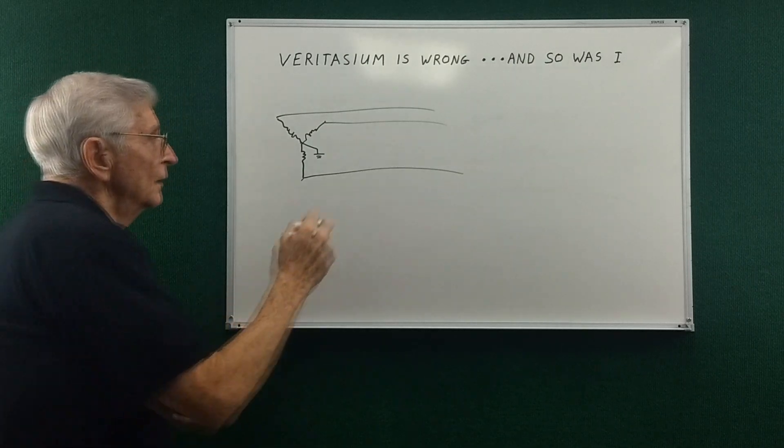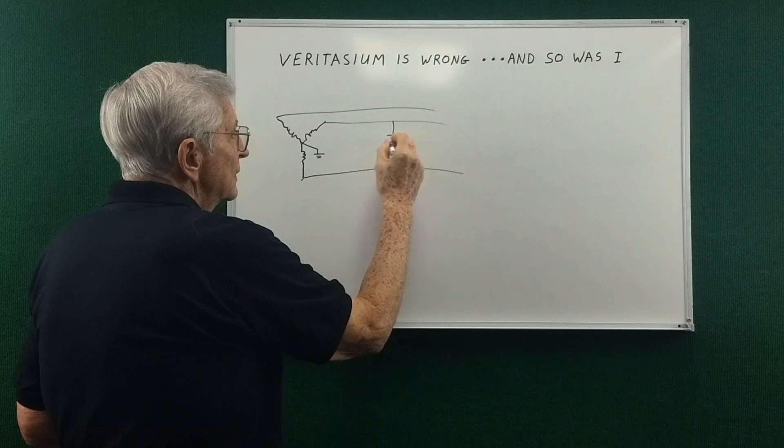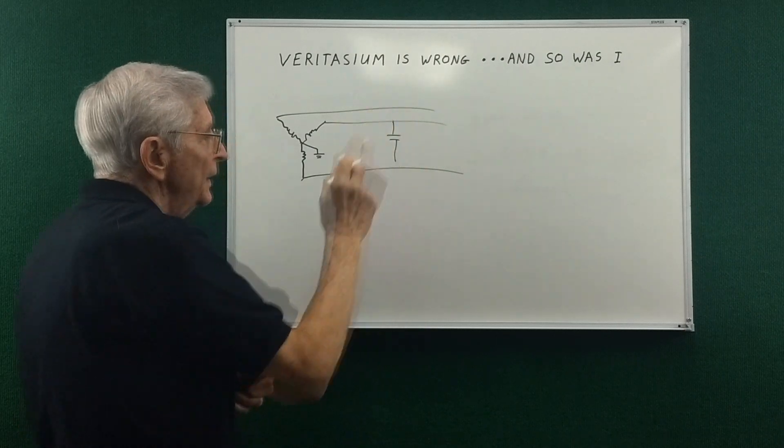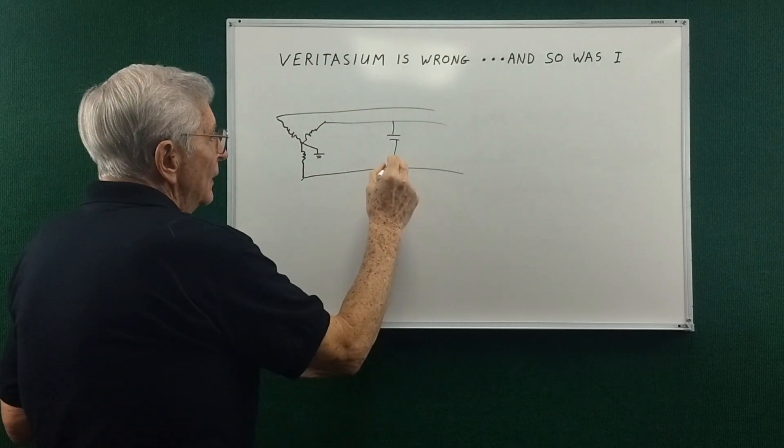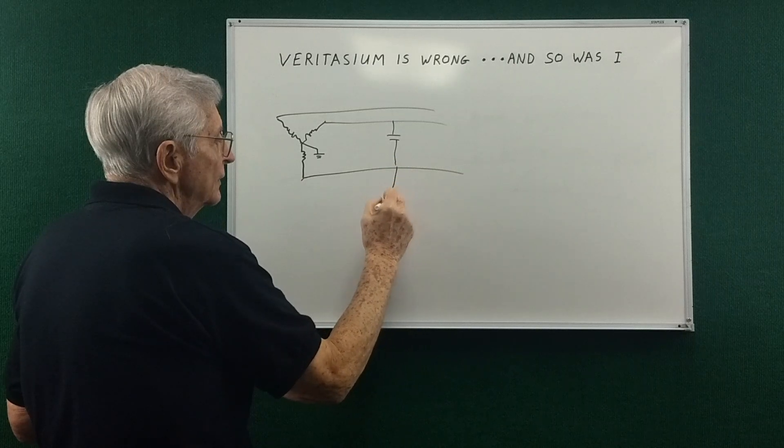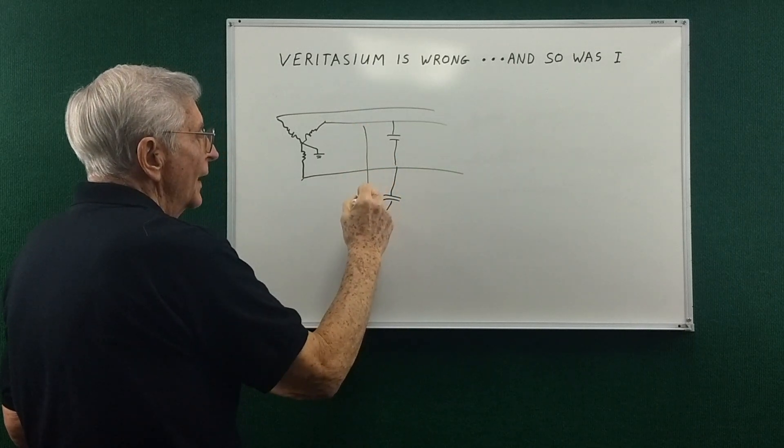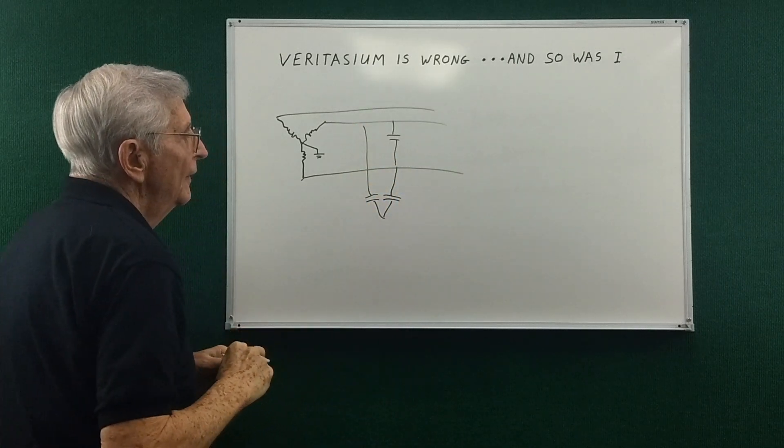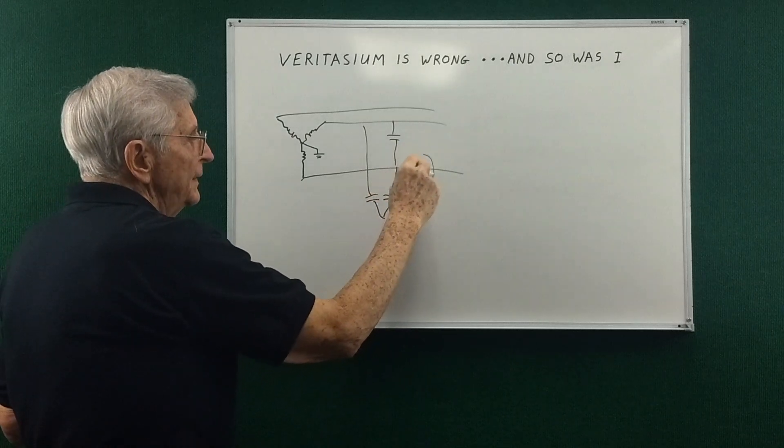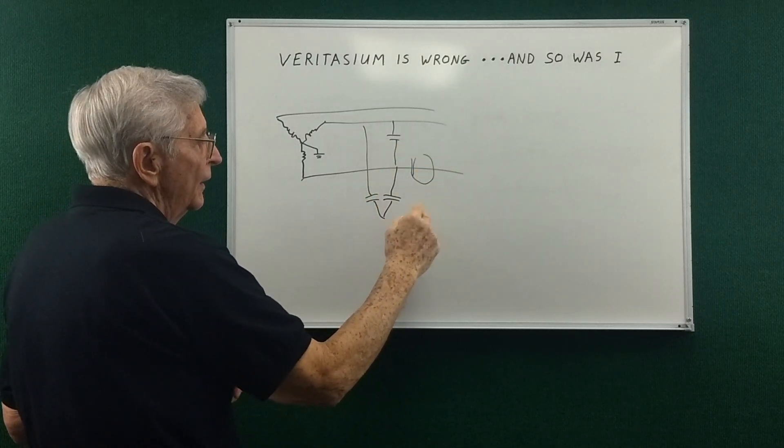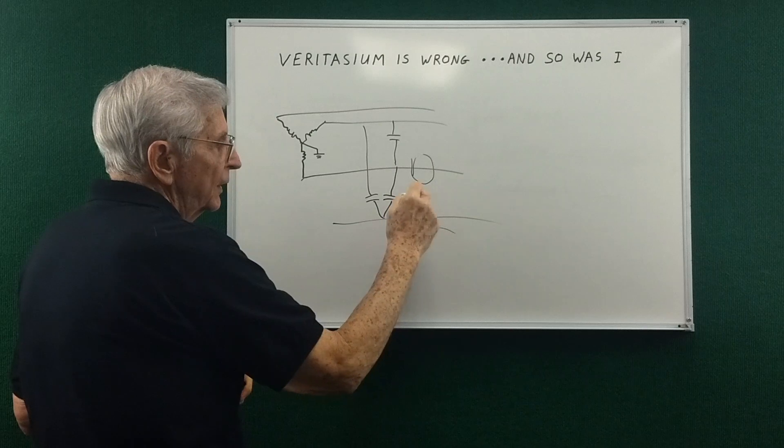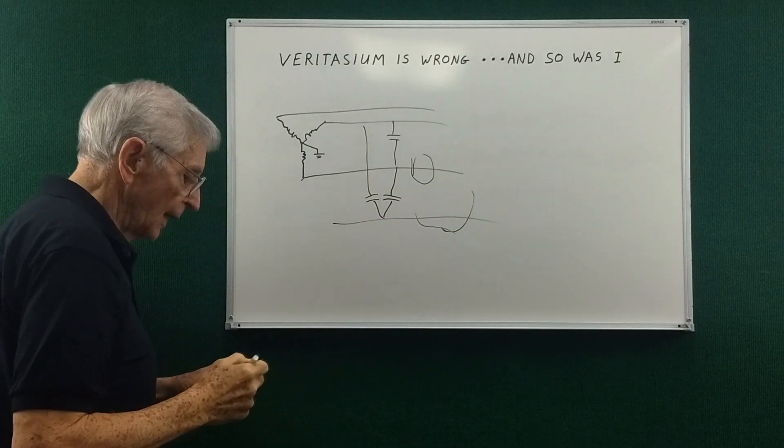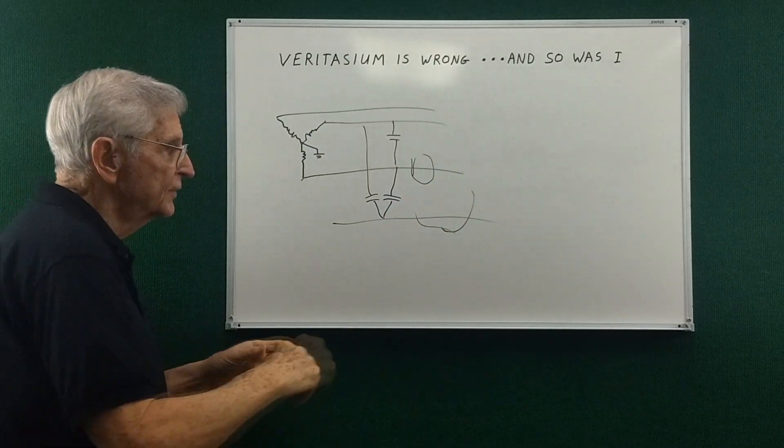Now there's not only capacitance between all three wires, there's also capacitance to ground from each wire and the magnetic field around each wire also can cut the ground and cause eddy currents.